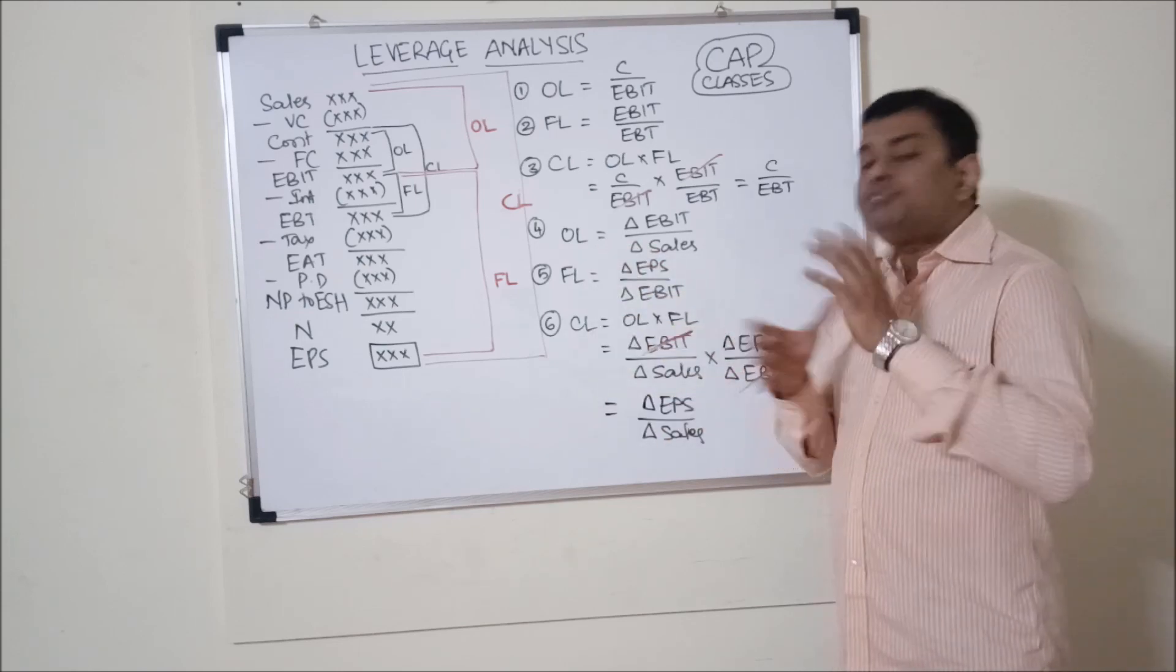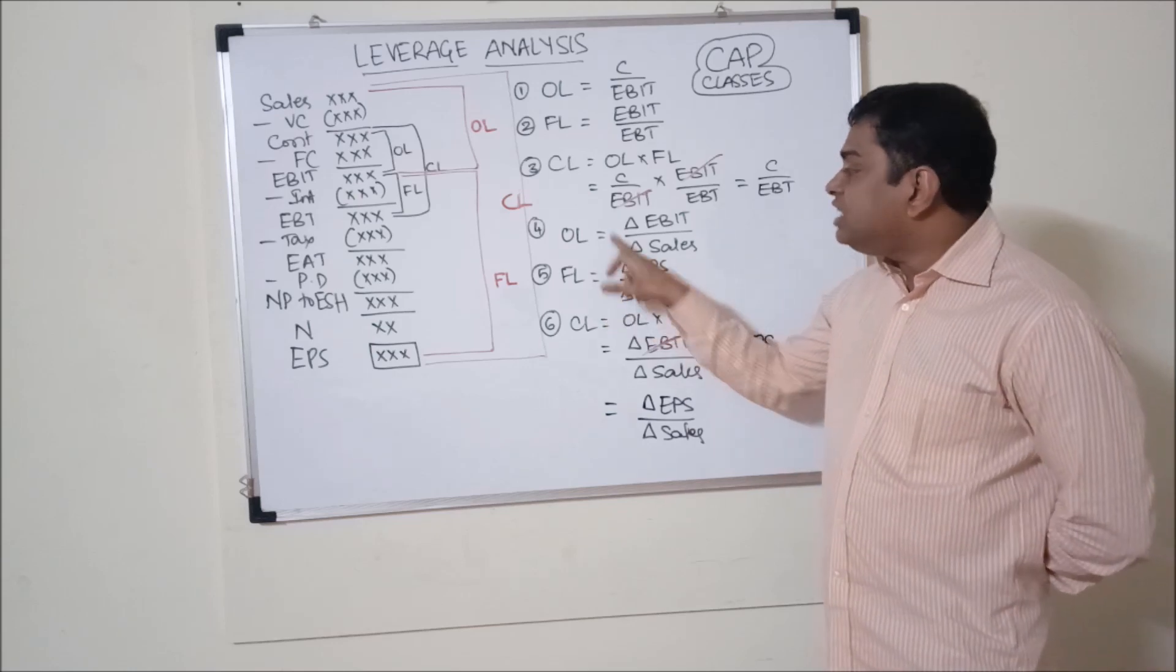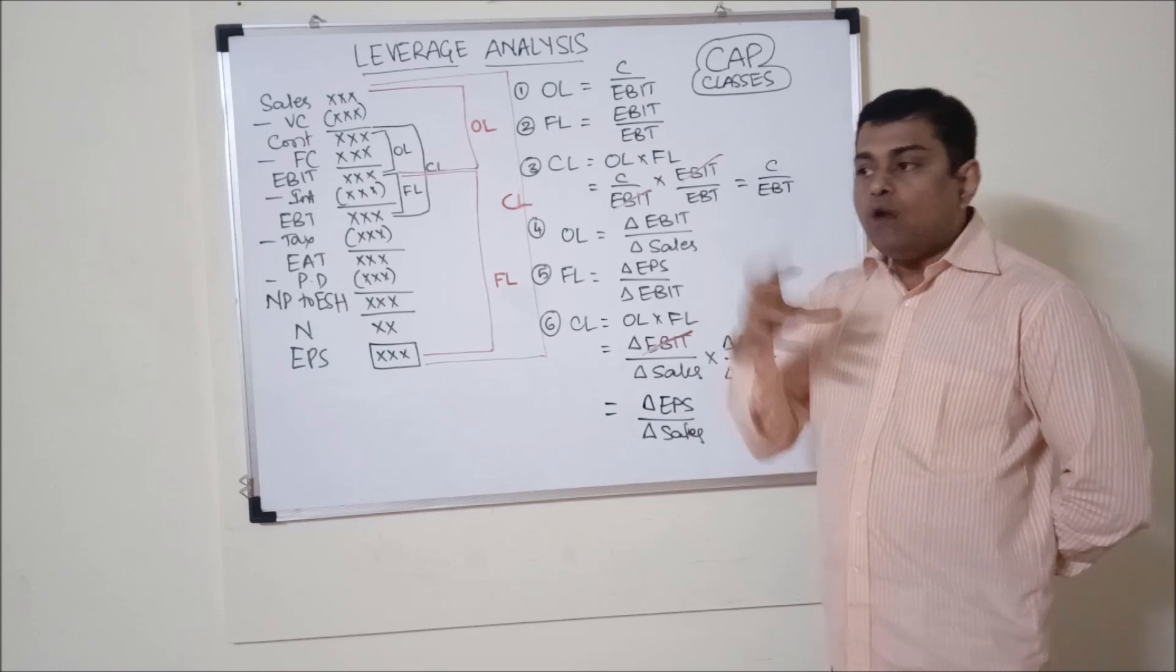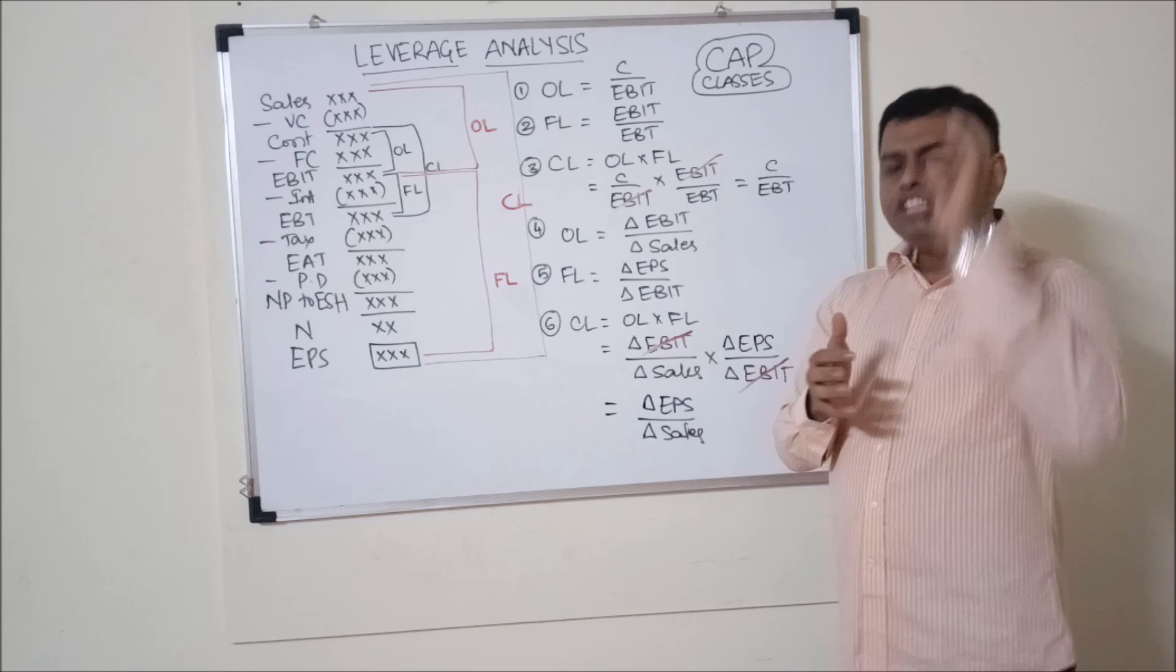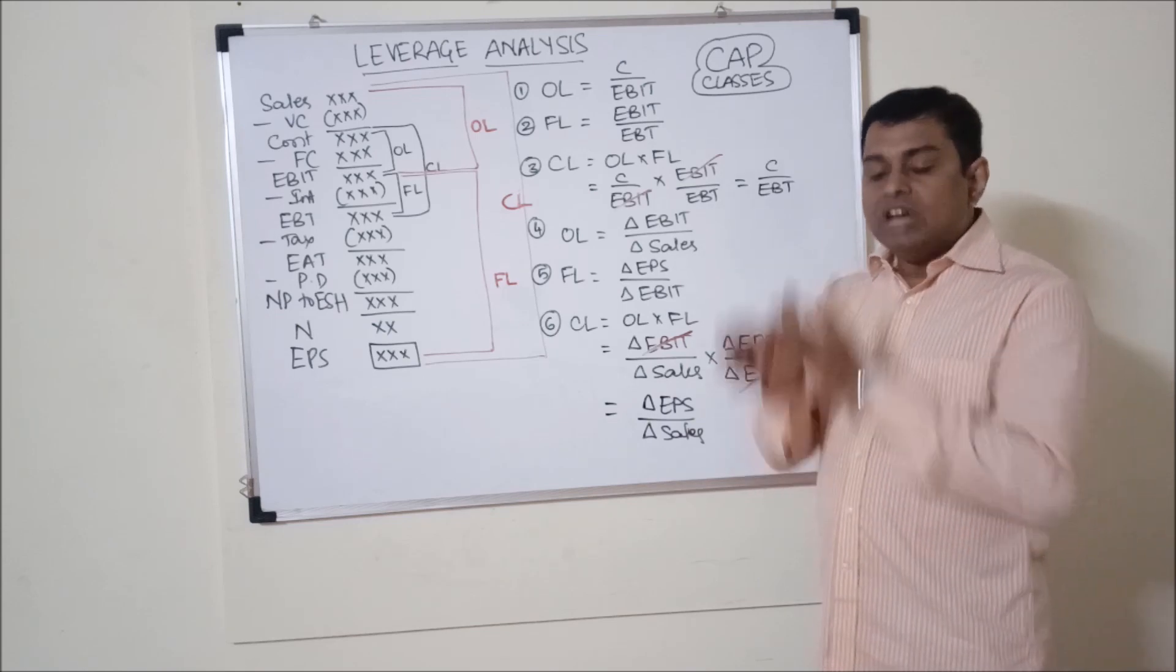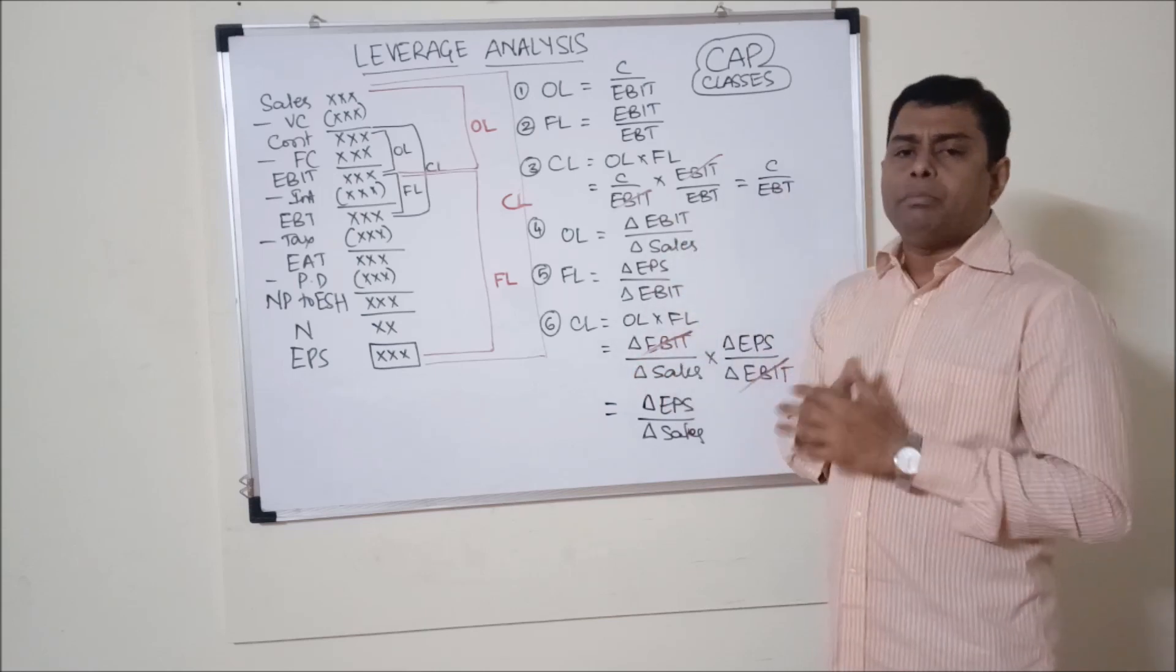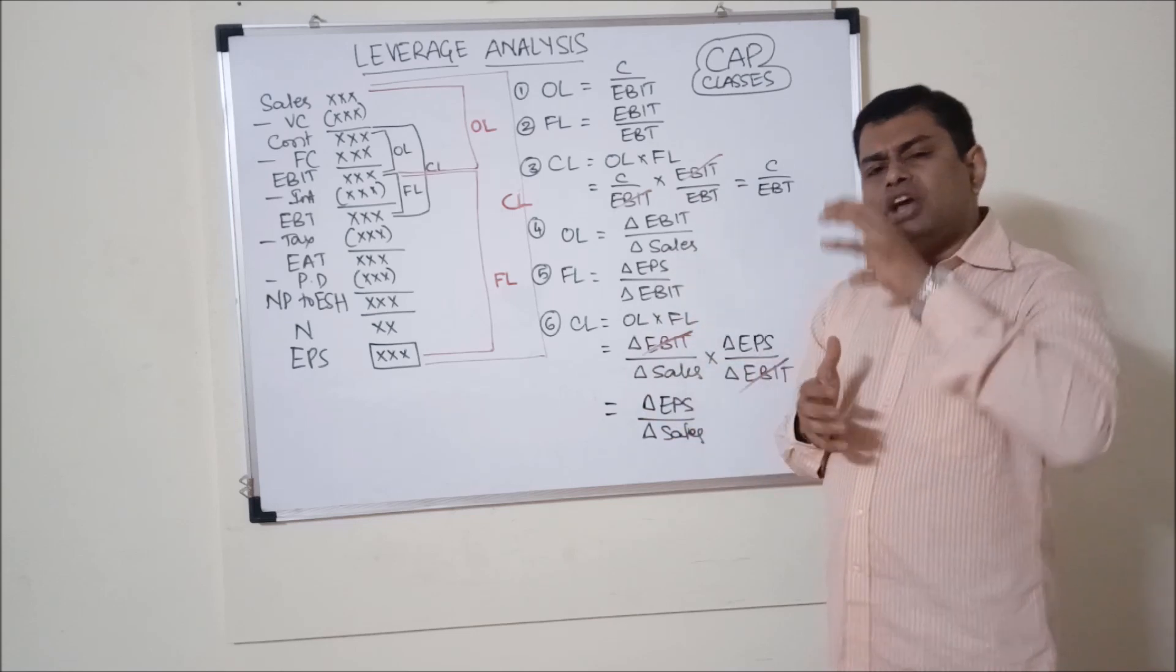Now the last point here to observe is how should I calculate percentage change in EBIT, percentage change in sales, percentage change in EBT. How can I calculate percentage changes? Simple. Any change, whether it is a growth or a decline, change is equal to current year minus base year divided by base year.